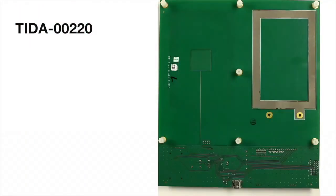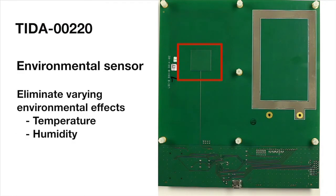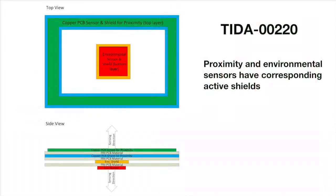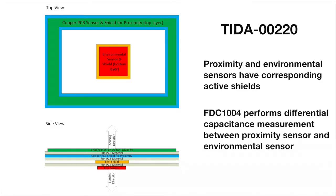The copper PCB sensor is located here, and the conductive nickel print sensor is located here. The reference design utilizes an environmental sensor on the back side of the board to eliminate varying environmental effects, including temperature and humidity. Both the proximity and the environmental sensors have corresponding active shields, which helps provide directivity for both sensors, as well as reducing environmental impact to the measurement. The FDC1004 performs a differential capacitance measurement between the proximity sensor and the environmental sensor.